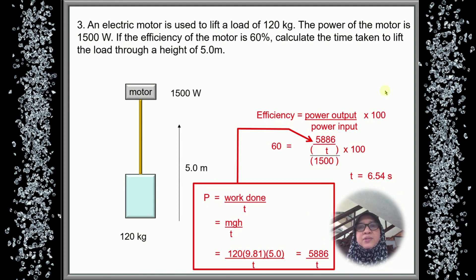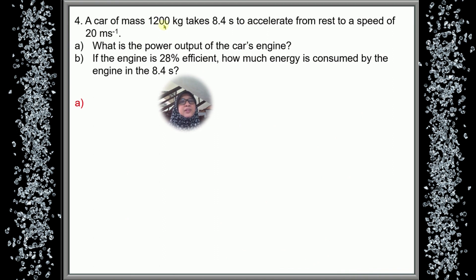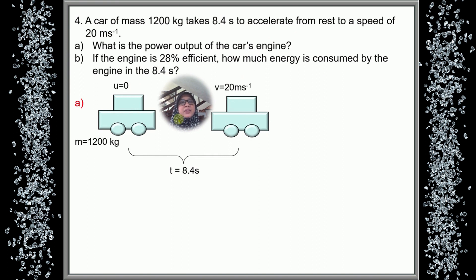Question 4: A car of mass 1,200 kg takes 8.4 seconds to accelerate from rest to a speed of 20 meters per second. What is the power output of the car's engine? And for part B, if the engine is 28% efficient, how much energy is consumed by the engine in the 8.4 seconds? The car travels from U = 0 to a final velocity of 20 m/s. The mass is 1,200 kg and the time is 8.4 seconds.